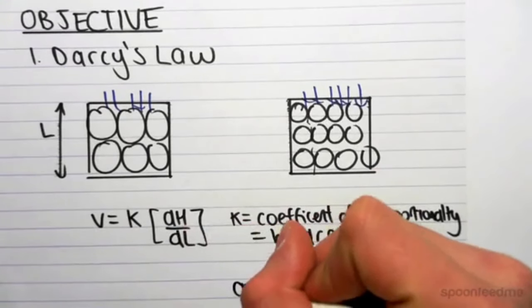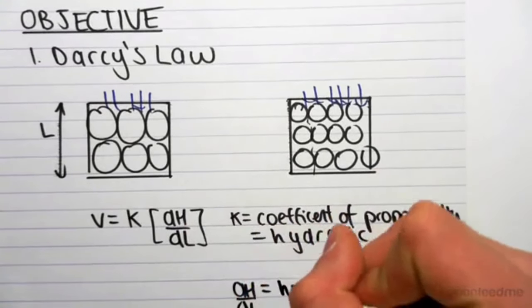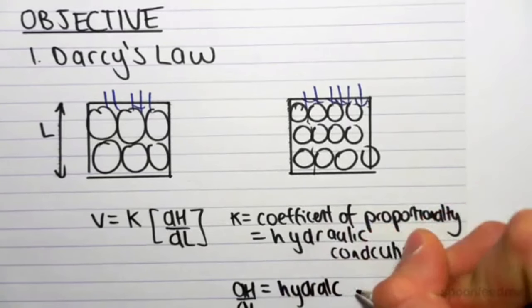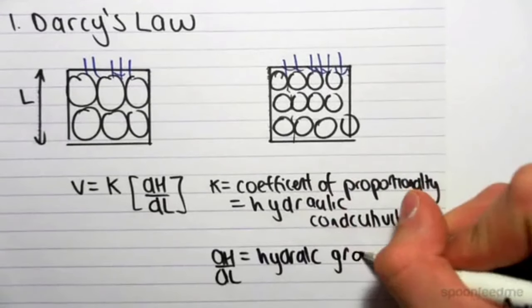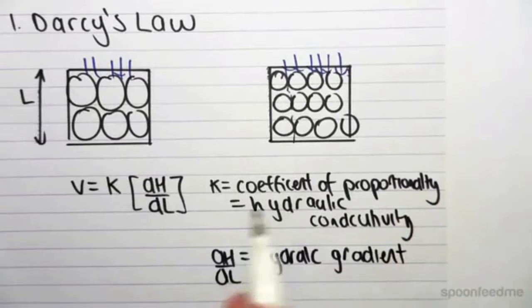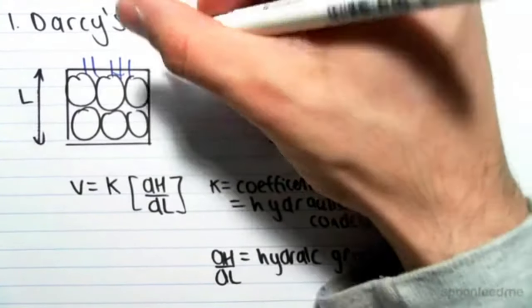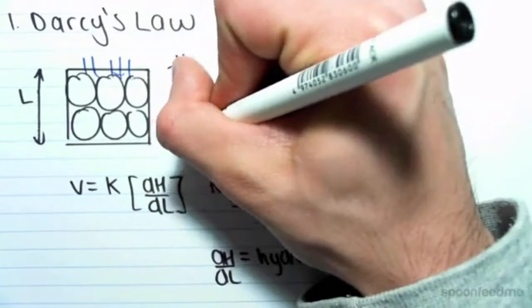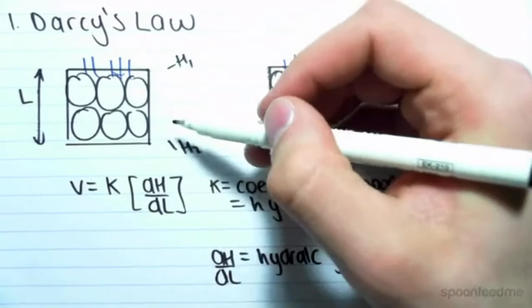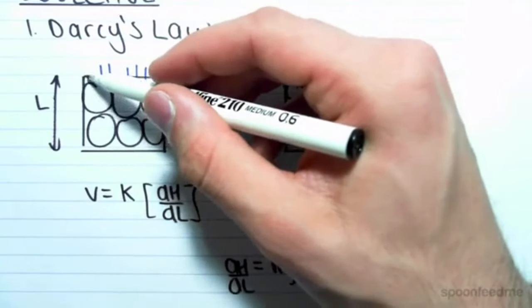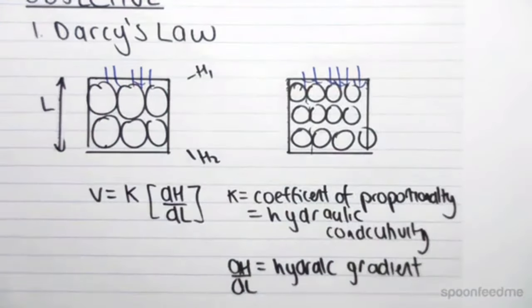DH over DL is known as the hydraulic gradient. It's the change in head—say we have a head value here and a head value here—that change in head which causes flow, divided by the change in length. From that point to that point, the change in length would be L.